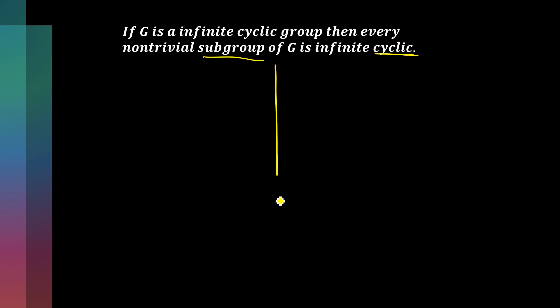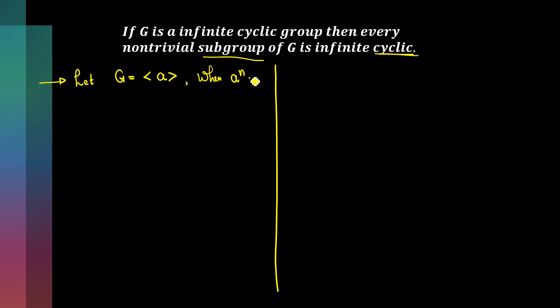So if we have a non-trivial subgroup, it is definitely going to be cyclic. We just need to prove that any non-trivial subgroup of G must be an infinite set — it cannot be finite. Let G be an infinite cyclic group generated by a, where a raised to n cannot equal the identity for any n in the natural numbers. So G is cyclic generated by a, and it is infinite because the order of a is infinite.